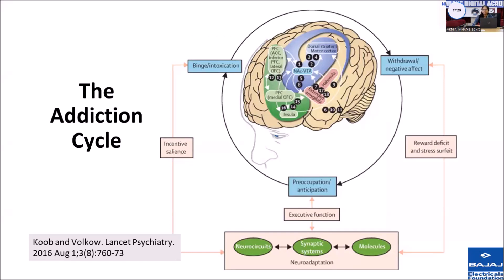This addiction cycle happens in three stages. The first is binge intoxication — the stage at which one consumes the intoxicating substance and experiences its effects, with a lot of dopamine in the reward pathway. With continued use, it can lead to habit formation, meaning the behavior occurs irrespective of whether the reward occurred or not. The next stage is withdrawal or the negative effect, where the individual experiences a negative emotional state when the substance is not there, correlating with low dopamine in the reward pathway and decreased motivation for other activities. The third stage is preoccupation and anticipation, where the individual keeps seeking the substance and engaging in activities to procure it.